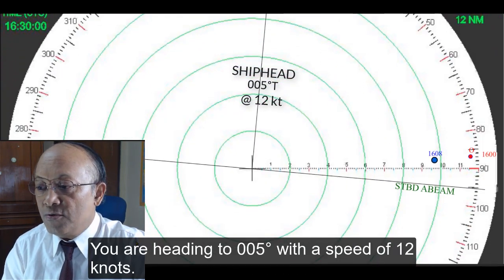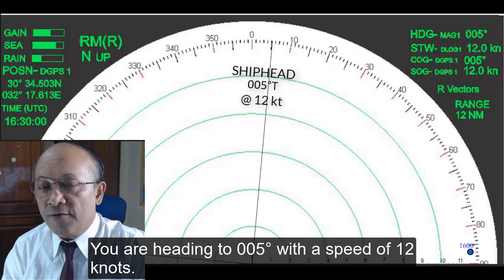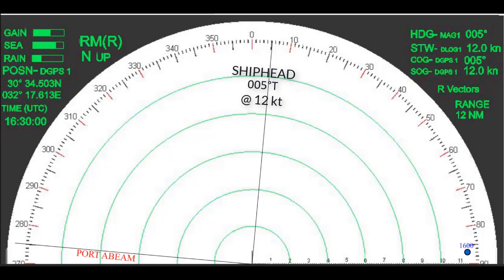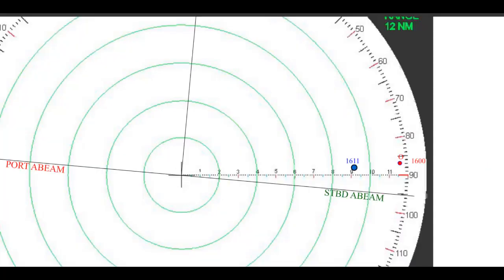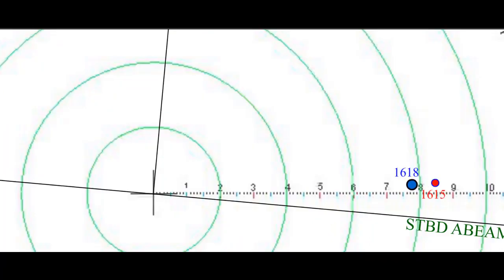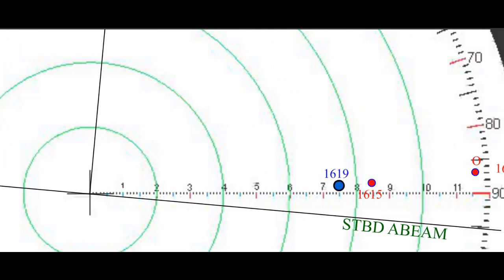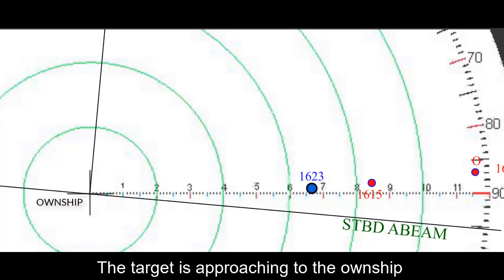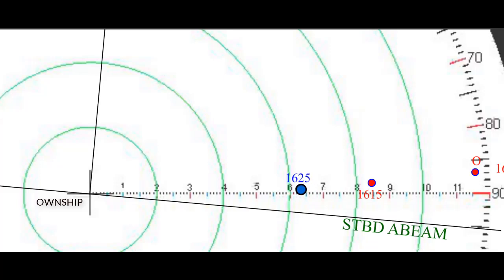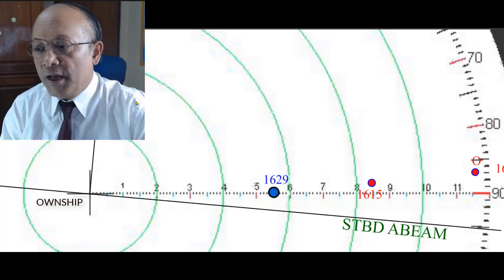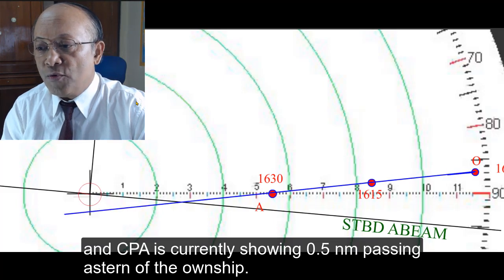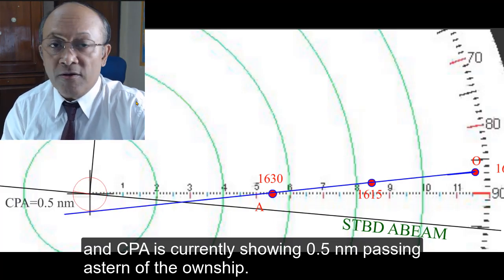You are heading to 005 degrees with a speed of 12 knots. The target is approaching the own ship, and the CPA is currently showing 0.5 nautical miles, passing astern of the own ship.